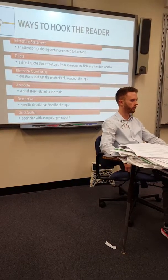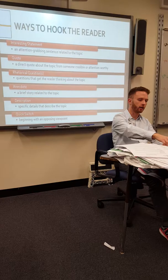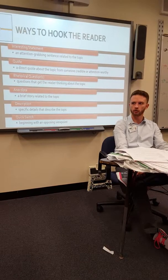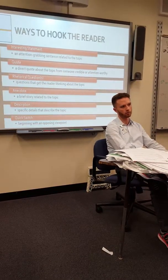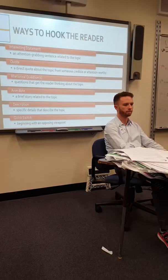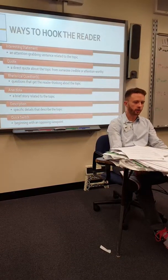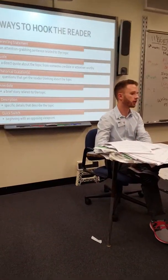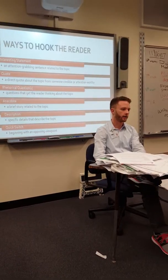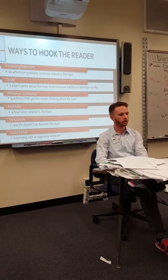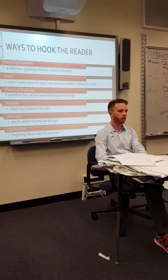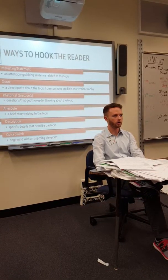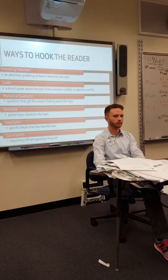An anecdote is a brief story related to the topic. Since our topic is budgeting, maybe you could talk about a time where you had to budget your money or figure out how to split it up to buy the most things you want. A description uses specific details — your other sheet with the big idea has supporting details you can pick from. The last option is a quick switch: beginning with an opposing viewpoint, like talking about spending all your money right away instead of budgeting.